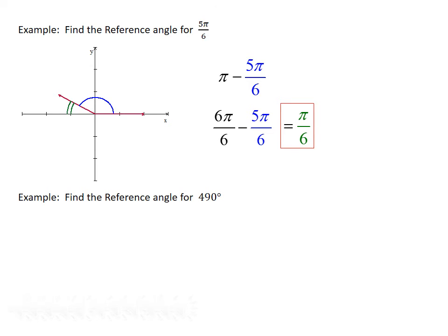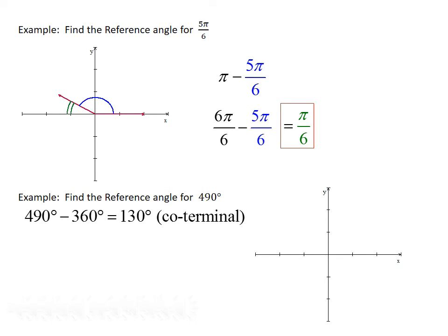For one last example, let's find the reference angle for 490 degrees. Since 490 is greater than 360, we first find a coterminal angle: 490 minus 360 gives 130 degrees. Sketching 130 degrees, it goes just past the y-axis into quadrant 2. The left-hand x-axis is 180 degrees, so we subtract: 180 minus 130 gives a reference angle of 50 degrees.